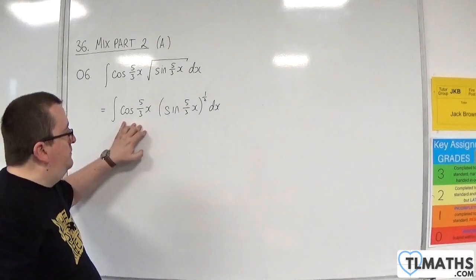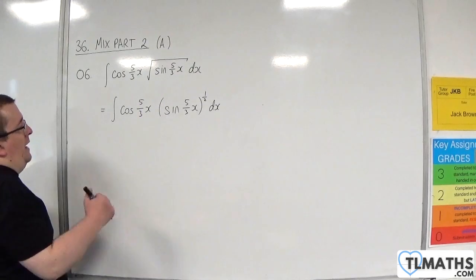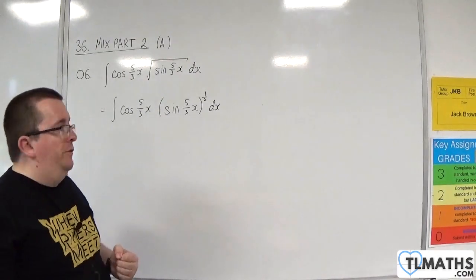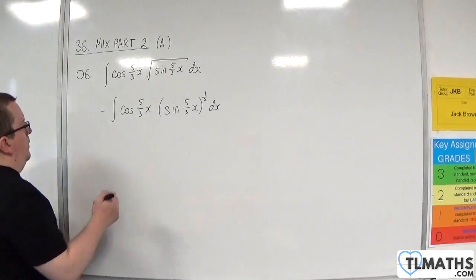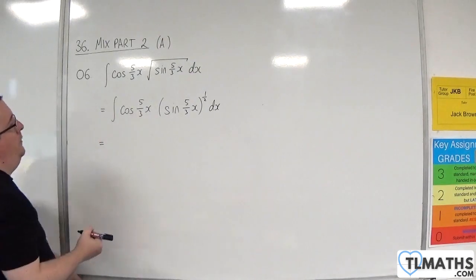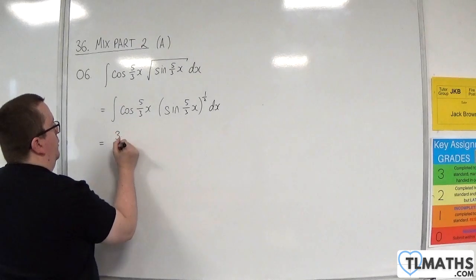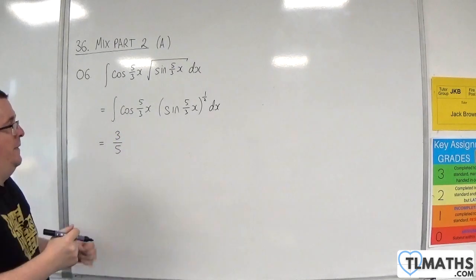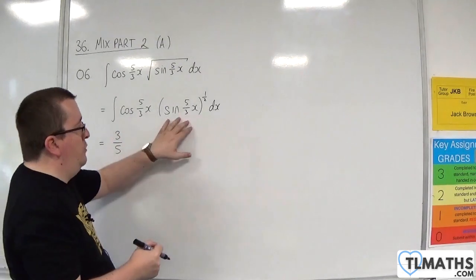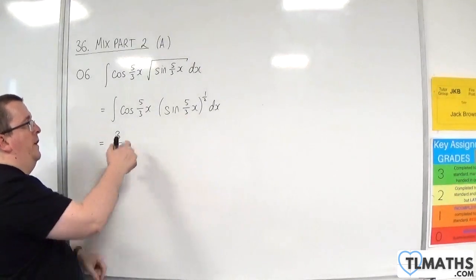So that's something to keep note of. We're going to have to have 3 fifths. That's going to come through. Because remember, that differentiates to 5 thirds cosine 5 thirds x. And we've got 3 fifths of what we need.